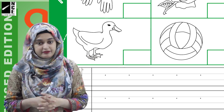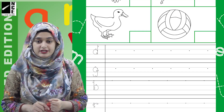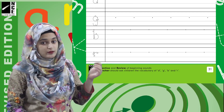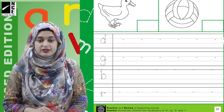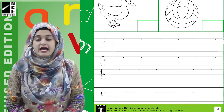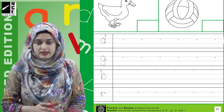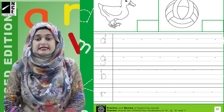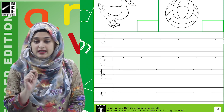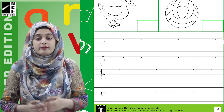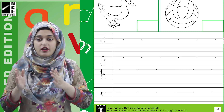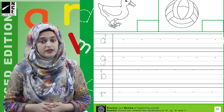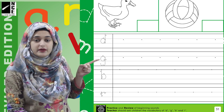Then we have some lines given below and the letters D, G, B and R are written here. You have the letter sounds here, so you have to trace them first. We always start with the starting point and follow the arrows. After tracing, the rest of the line is to be completed by independent writing. You are given the starting point but then you have to write D, G, B and R all by yourself.